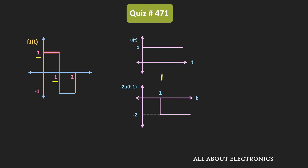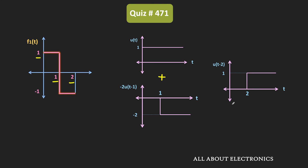If we add these two functions, we will have this kind of waveform. Now at time t=2, the amplitude of the waveform becomes 0. Currently the amplitude is -1, and to make it 0, we need to add a time-shifted unit step function whose amplitude is equal to +1, starting at time t=2. By adding these three functions, we can achieve our f1(t).